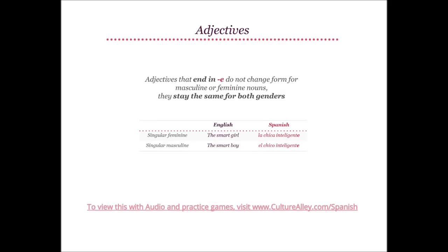Now let's look at adjectives that don't end in O or A. Adjectives that end in E do not change form for masculine or feminine nouns — they stay the same for both genders. Singular feminine for the smart girl will be la chica inteligente; singular masculine for the smart boy becomes el chico inteligente. In both forms we use the same adjective inteligente; however, the definite article changes — el with masculine and la with feminine.